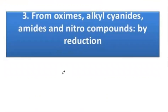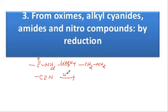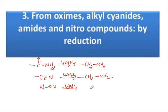Next, amines can also be prepared from oximes, alkyl cyanides, and amides. When an amide (C-O-N-H2) undergoes reduction with lithium aluminium hydride, it forms an amine. A cyanide compound also, upon reduction with lithium aluminium hydride, can produce an amine. Oximes (with C=N-OH) upon reduction with lithium aluminium hydride can also produce amines.